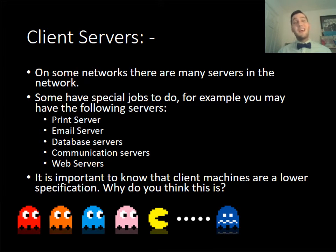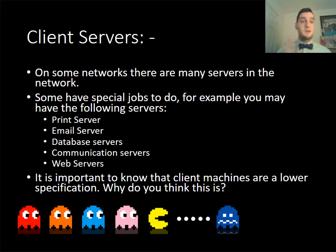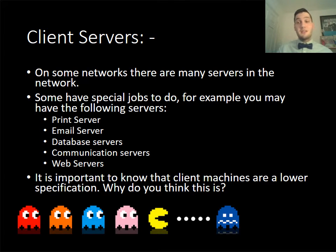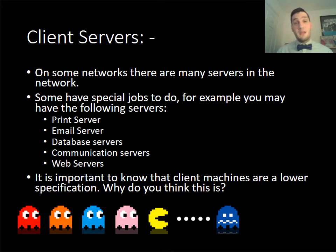On some networks there are many servers available — different servers for everything. You might not just have one server that gives you access to print, to files, to login; you might actually have lots of different servers for specific things. You can have a print server that manages printing, an email server, a database server — so if you're in a school running something like SIMS, you will have a database somewhere that has all that personal information on it. That server is in charge of saying yes you can have that information or no. There are also communication servers, and web servers that provide access to your school website or to making a website.